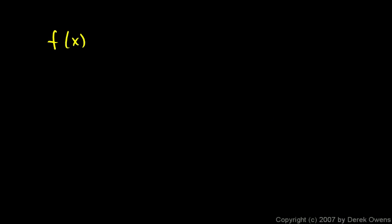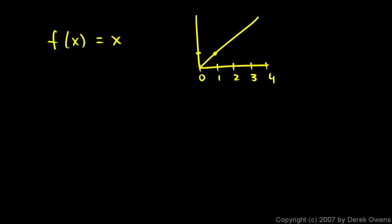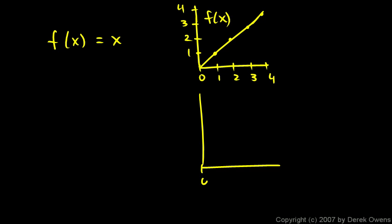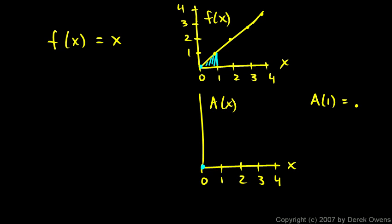Now let's do f(x) equals x. This one is going to end up being a little bit different. The graph f(x) = x goes through the points (1,1), (2,2), (3,3), and (4,4). We start at 0 and plot the point (0, 0). By the time we get to x equals 1, we've enclosed this little triangle, and the area of the triangle is one-half base times height, which is one-half. So the area at x equals 1 is one-half.